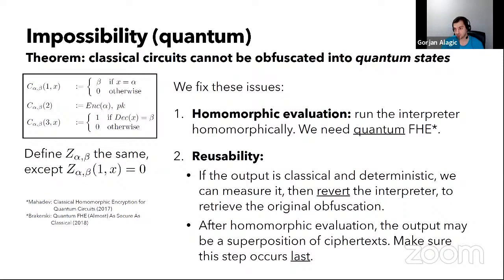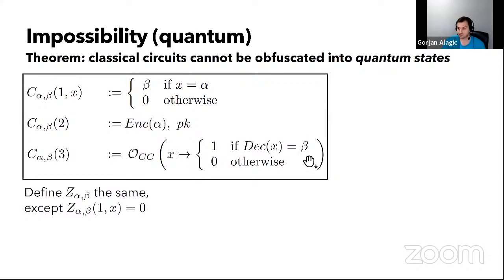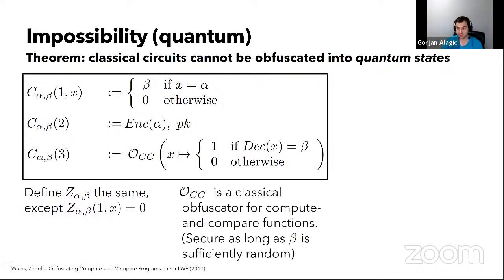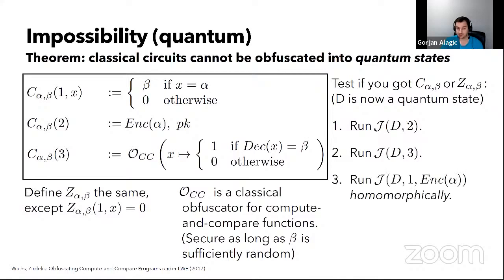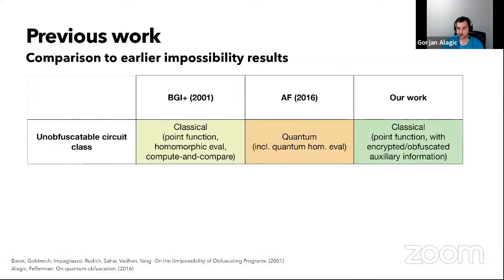We leave the third part for last. If at that point the state blows up, that's okay, because we're done. This encryption of the special input is already classical. The checker circuit, it turns out, we can also make classical using a classical obfuscator, which works for this very limited class of circuits — based on a certain version of LWE. Once we've done that, we have two classical pieces to the obfuscation, both of which we can extract and then revert to the original state. The third step is the quantum FHE execution of this point function, which may destroy the state, but that's okay. Finally we can run this classical checker.